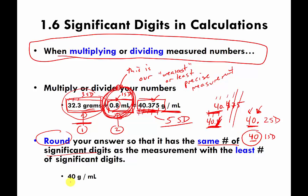So the properly rounded answer is 40 grams per milliliter. The whole point, to emphasize again, is to prevent you from deluding yourself into thinking you made a really precise measurement by writing out all the digits — because you didn't. One of your measurements was pretty lousy; you only knew it to one significant digit. You're not allowed to add more precision than you actually have. So we're stuck at 40.